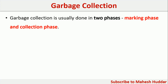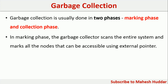Garbage collection is done usually in two phases. The first is called the marking phase and the second is called the collection phase. In the marking phase, the garbage collector scans the entire system and marks all nodes that are accessible using the external pointer. If they are accessible, they will be considered as true. If they are not accessible, they will be considered as false.